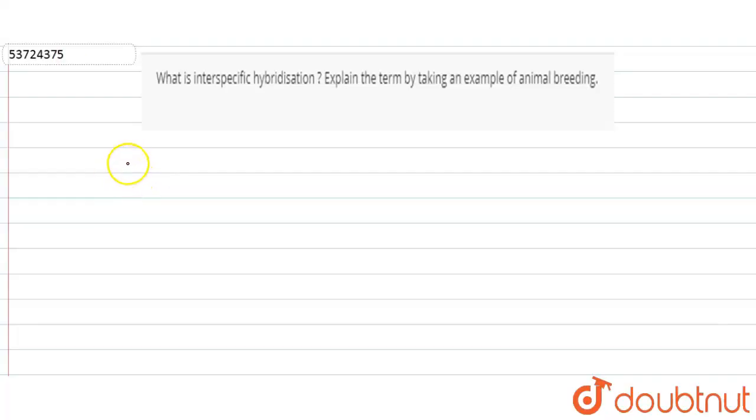Hello everyone, today's question is what is interspecific hybridization? Explain the term by taking an example of animal breeding. We will tell you what is interspecific hybridization, and we have to give an example from animal breeding.